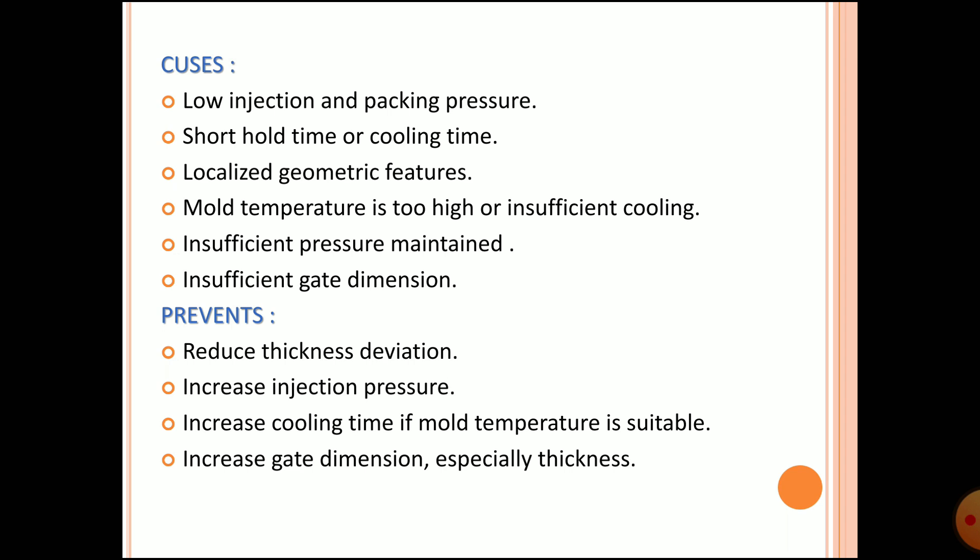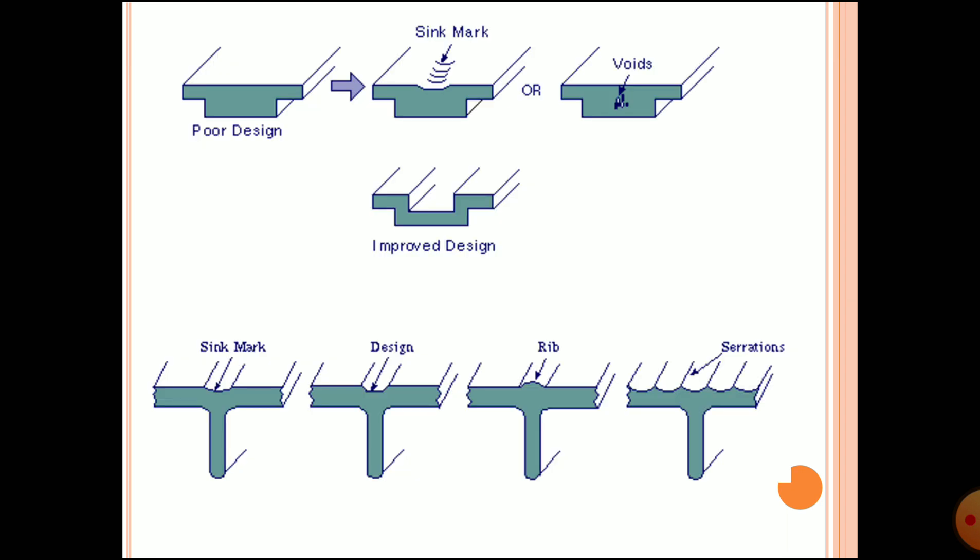Reduce the wall thickness deviation, increase the injection pressure, increase the cooling time if the mold temperature is suitable, and increase the gate dimension — especially thickness. Those are some preventions to take care of. You can see the sink mark defect and how it occurs.